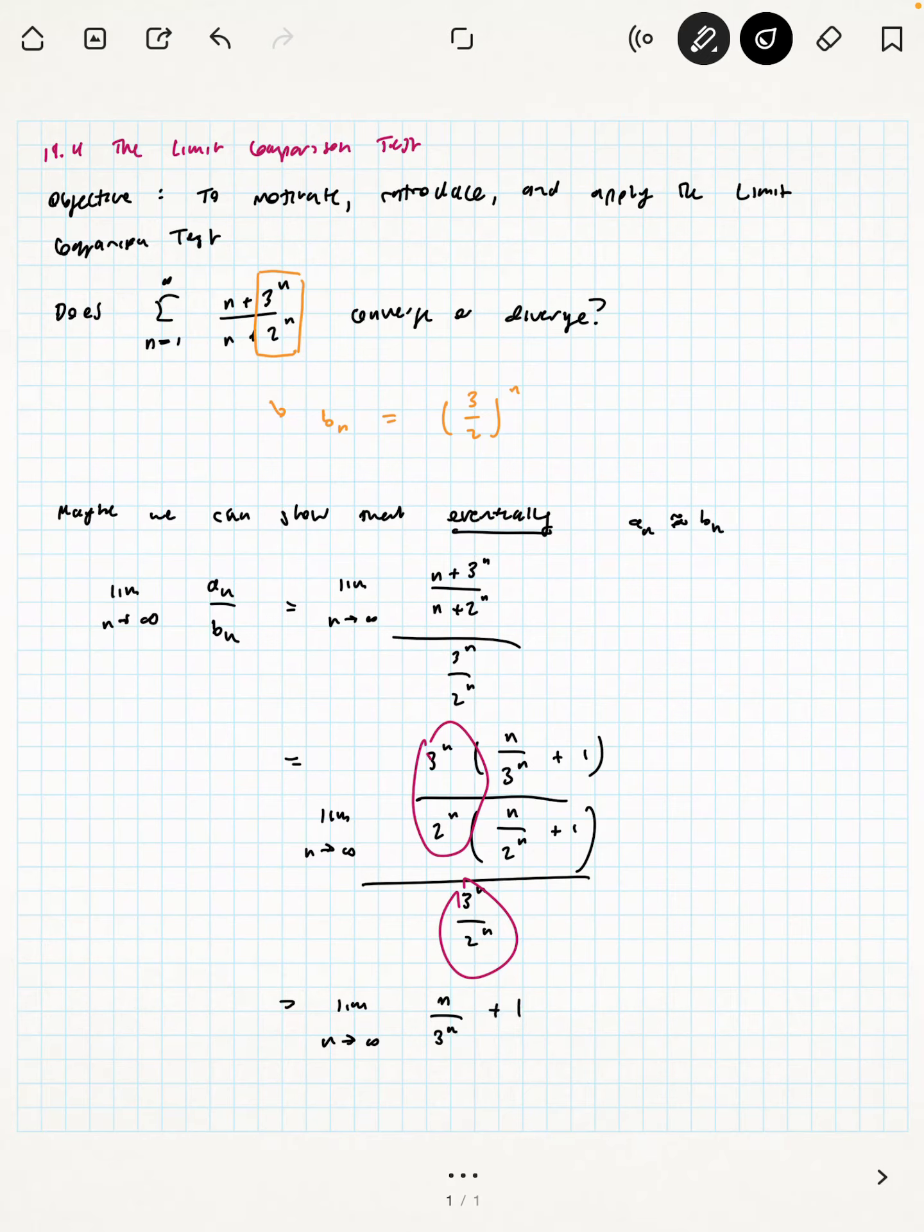So the limit as n approaches infinity of n over 3 to the n plus 1 over n to the 2 n plus 1. Well, think back to when we talked about dominance in Calc 1, and we said that as we were examining functions and taking their limits as x goes to infinity, dominance theories give us an intuition about what functions grow faster.